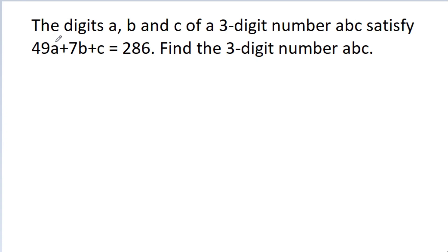In this video, we have given that the digits a, b, and c of a three-digit number abc satisfy 49a plus 7b plus c is equal to 286. We have to find the three-digit number abc.